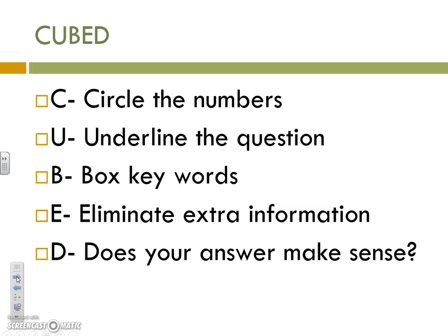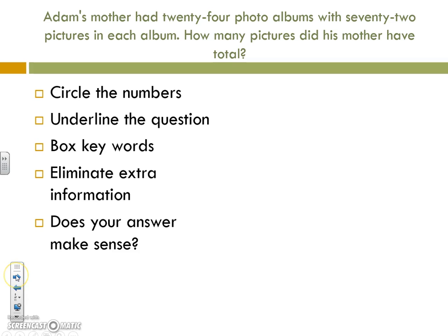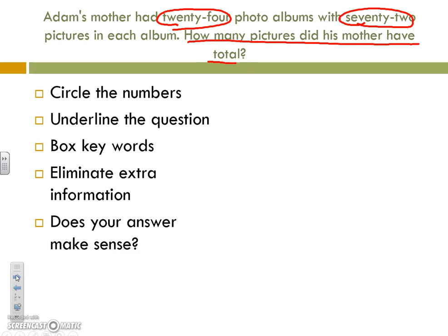This is a good time to pause and write this in your notes. Let's do the first problem together. Adam's mother had 24 photo albums with 72 pictures in each album. How many pictures did his mother have in total? So let's go ahead and circle the numbers. Next, let's underline the question: how many pictures did his mother have total?